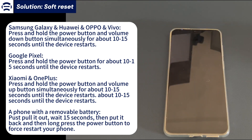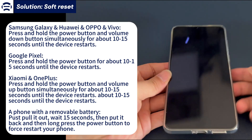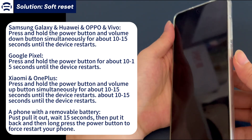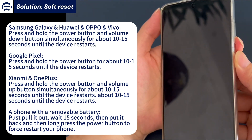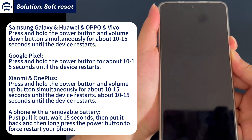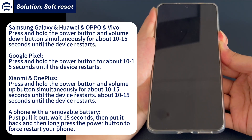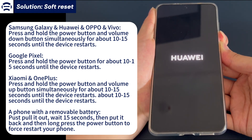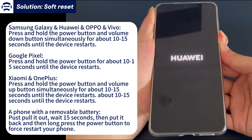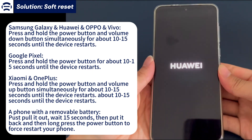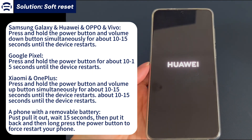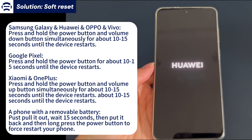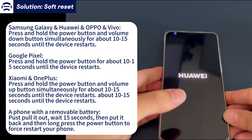To force restart a Samsung Galaxy, Oppo, or Vivo phone, press and hold the power button and volume down button simultaneously for about 10 to 15 seconds. When you see the brand logo, release the buttons. To force restart a Google Pixel smartphone, press and hold the power button for about 10 to 15 seconds. When you see the brand logo, release the button.